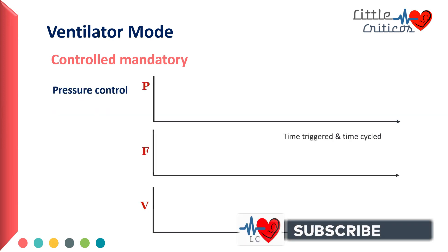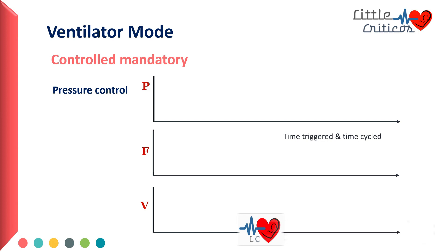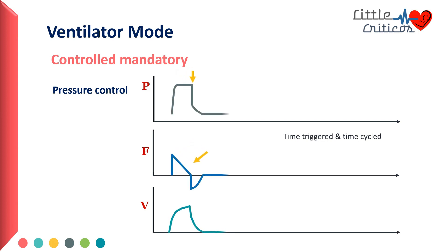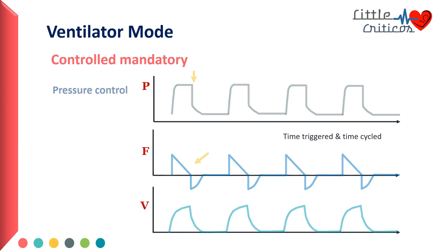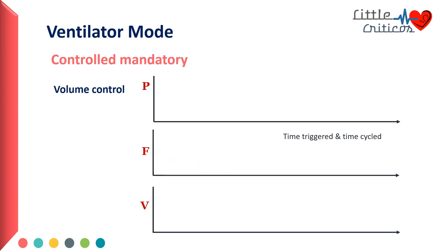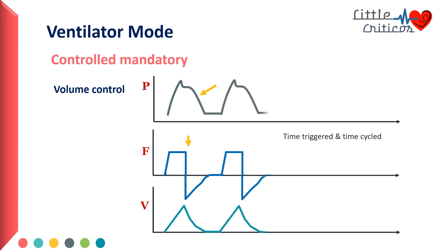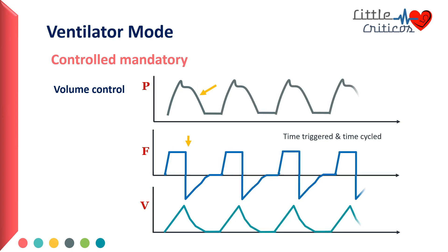In the graphical representation of the scalars in pressure control mandatory mode of ventilation, the pressure time scalar shows that pressure is constant whereas flow is variable. The breaths are time-triggered and time-cycled. In volume control mode of ventilation, the flow is constant whereas the pressure is variable depending on the lung condition.